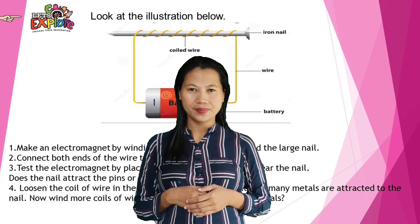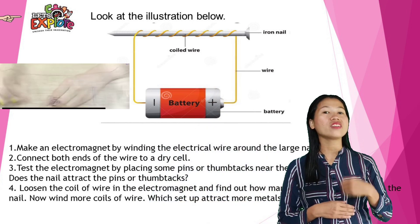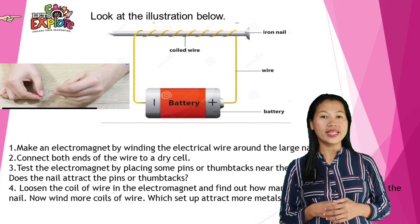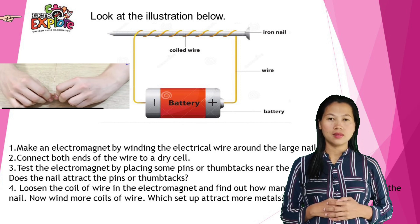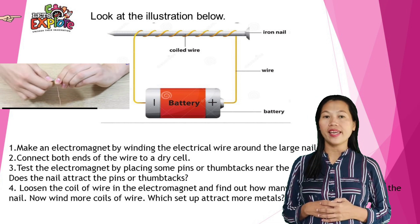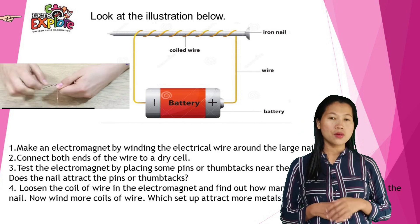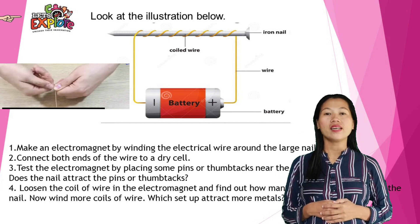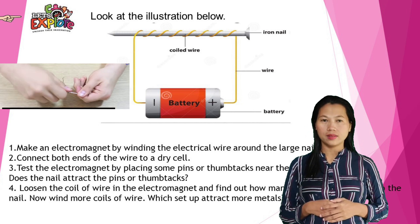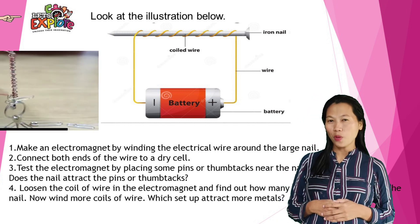The next step is to show you the activity. Step 1: Make an electromagnet by winding the electrical wire around the large nail. Step 2: Connect both ends of the wire to a dry cell. Step 3: Test the electromagnet by placing some pins or thumbtacks near the nail — does the nail attract the pins or thumbtacks? Step 4: Loosen the coil of wire in the electromagnet and find out how many metals are attracted to the nail. Now wind more coils of wire — which setup attracts more metals?